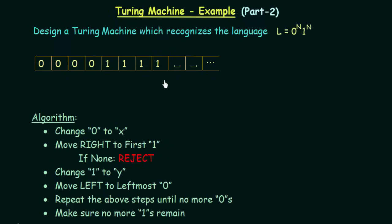Let's say we have our tape with input 00001111. We see that we have four zeros followed by four ones, so the number of zeros and ones are equal and this string should be accepted by the Turing machine we are going to design. The algorithm says to change the first zero to X. My tape head is over here, I see the first zero, and I replace it with an X. This is what step one says.